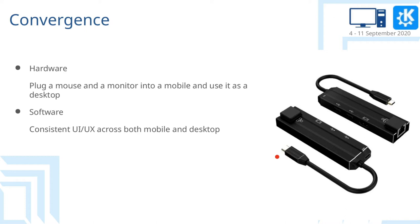There is a lot of hype around that term, but in reality it's a quite simple term that consists of just two requirements. There is the hardware part that suggests that you should be able to plug into your smartphone a mouse, a monitor, and a keyboard and use it as a traditional desktop workstation. And there is the second requirement where the applications should adapt their user interface and user experience according to the device that the application runs on.